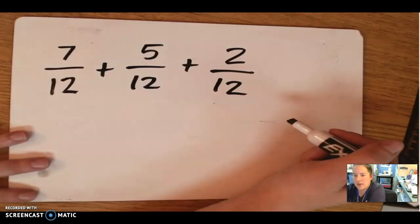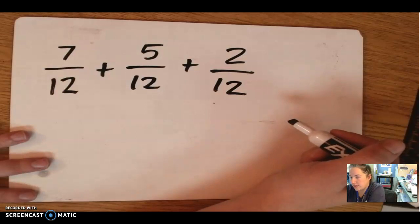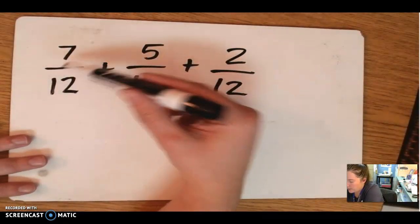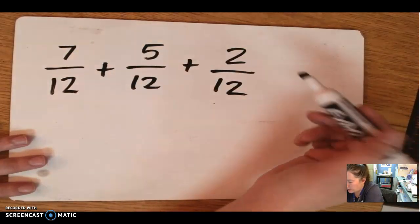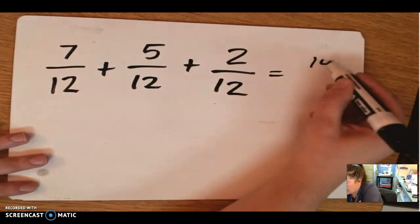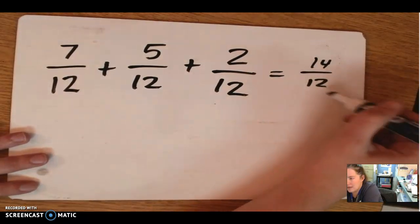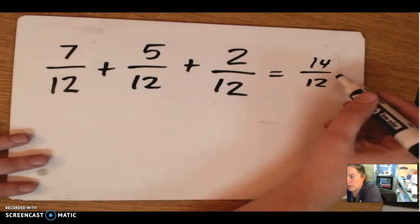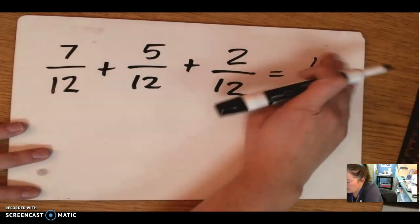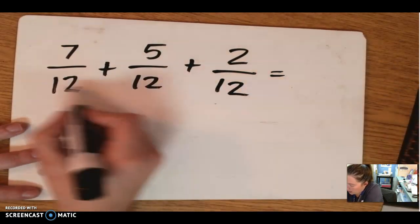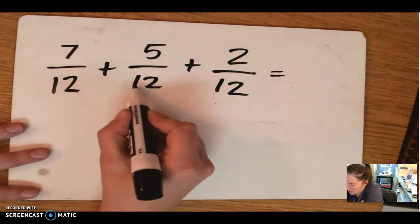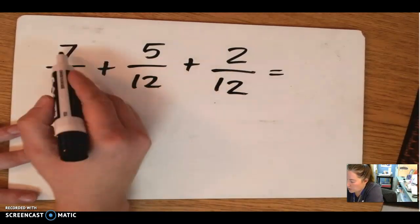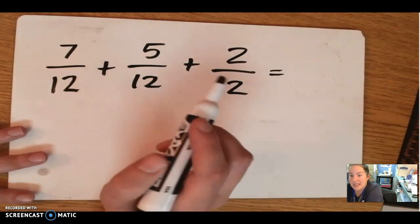Take a look at this one. 7 twelfths plus 5 twelfths plus 2 twelfths. Now, I could mentally do this and try to do 7 plus 5, then 5 plus 2, and I would get 14 twelfths. But my answer, what if this is an improper fraction? What if I need it as a whole number and a fraction? So I would be looking to make a whole. So my denominator is 12. What equals a whole in this case? 12 twelfths. So do any of these add up to make 12?